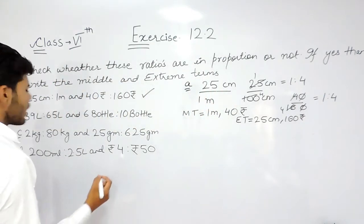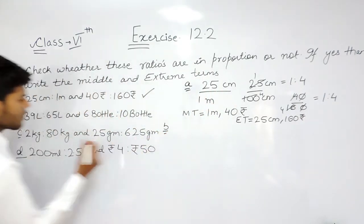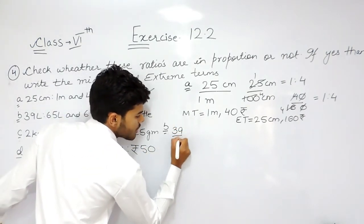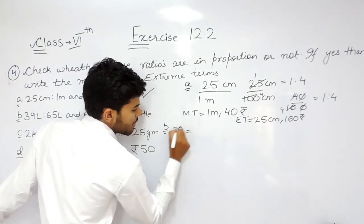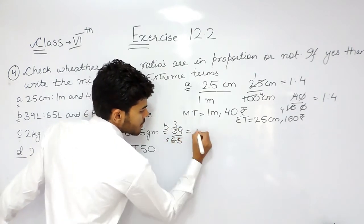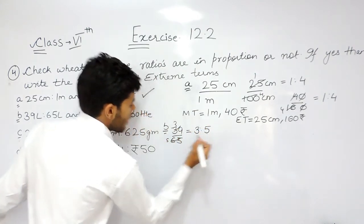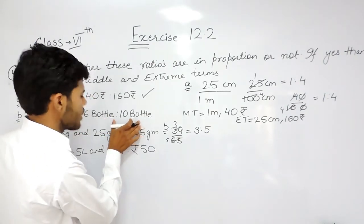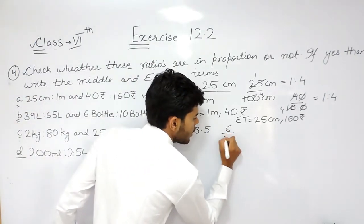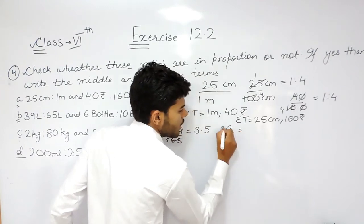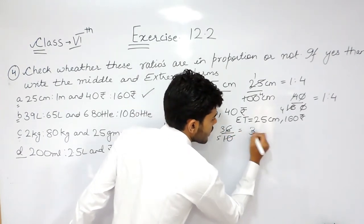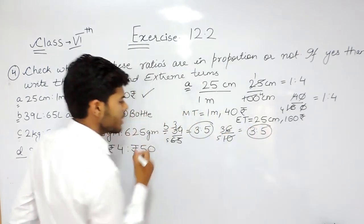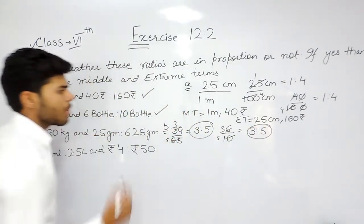Now coming to part B. It says 39 meters ratio 65 meters. So 39 upon 65 — 13 goes 3 times into 39 and 5 times into 65 — giving 3 ratio 5. And 6 bottles ratio 10 bottles: 6 upon 10 simplifies to 3 ratio 5. This ratio and that ratio are equal to each other, meaning they are in proportion.